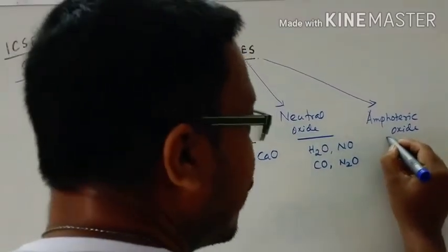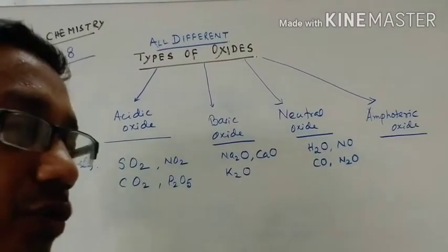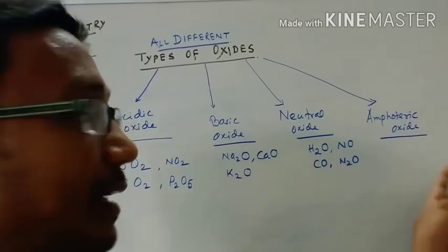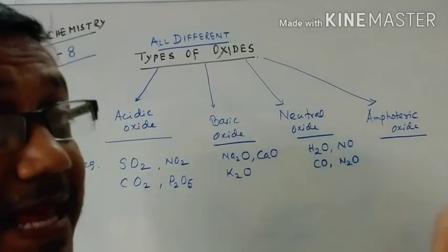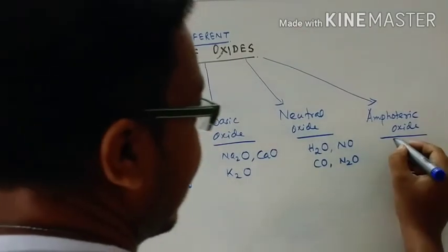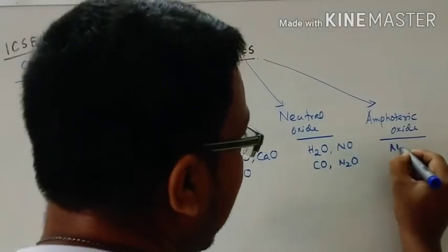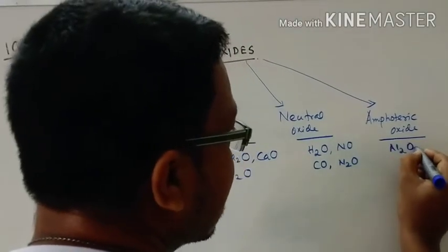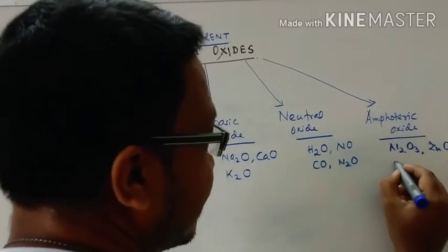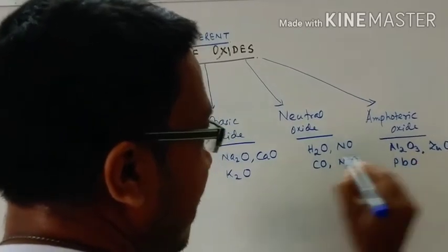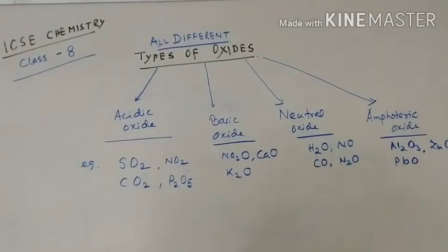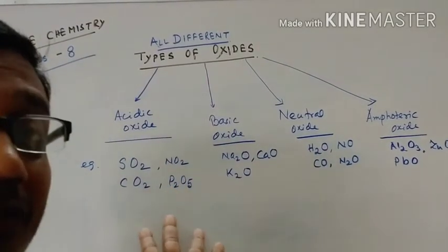Amphoteric oxides are those which react with acids as well as with bases. Examples include aluminium oxide, zinc oxide, and lead oxide. These are the amphoteric oxides.